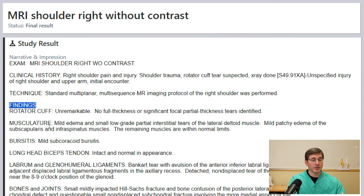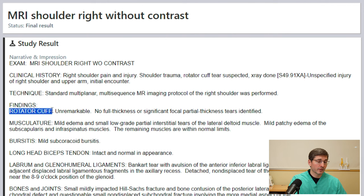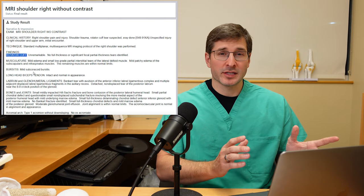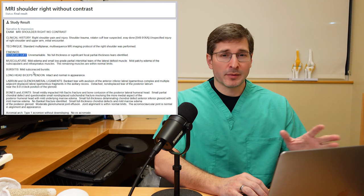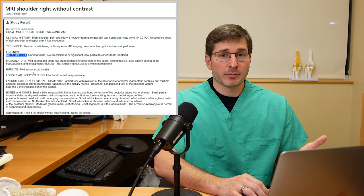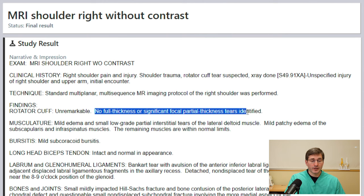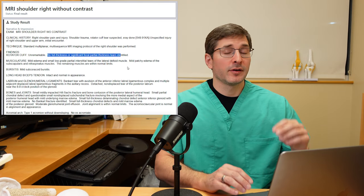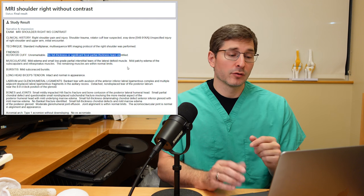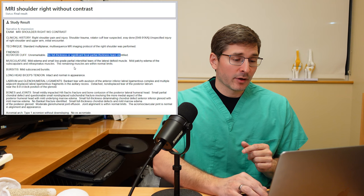They go on to the findings. The radiologist puts the specific findings in this section, and then later there's usually a summary. Different radiologists have their own particular style, so there might be some variation compared to your MRI. Here they start with the rotator cuff — they say it's unremarkable. There's no full thickness or significant focal partial thickness tear identified. Essentially, the four muscles of the rotator cuff show no injury.